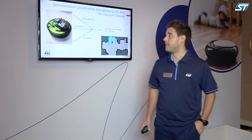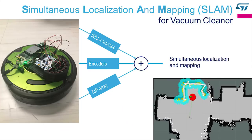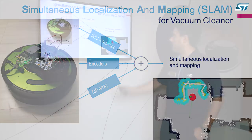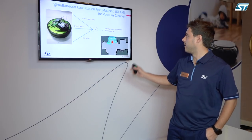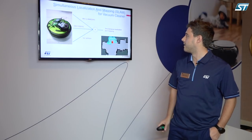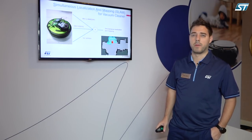So here is the demo. It's about simultaneous localization and mapping. We are fusing the data of the IMU sensor, our LSM6DSR, plus encoders, and the time-of-flight array VL53L1X. We are fusing all the data together in order to get simultaneous localization and mapping.